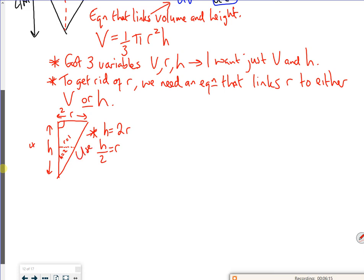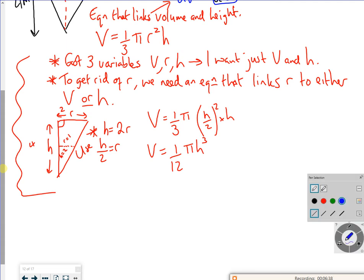So if I wanted to remove the r, I could use h/2 is r. So this is what I'm going to use. And that's where it's really, really hard. So my volume equation is now a third π, h/2 squared times by h. So I've got h/2 squared is 4 times by 3 is 12. Then I've got π h cubed. So there you go. So this bit here is the hard bit, where I've created another equation that links to remove the third variable.